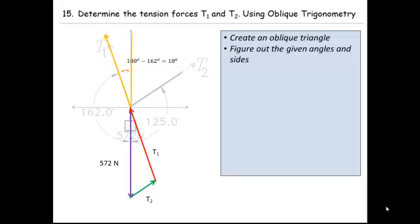And then we can notice that this angle, bounded by the yellow lines, is actually going to be the same as the angle between the 572 Newtons force and T1 in our oblique triangle. That property is the vertical or opposite angles, so now we have one of our angles in our triangle.